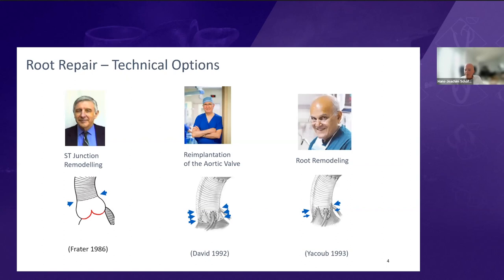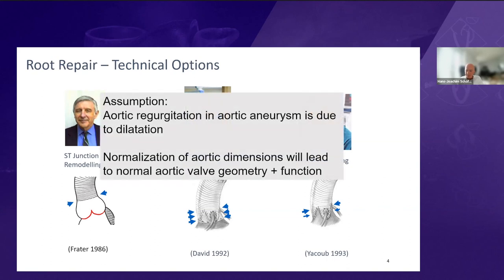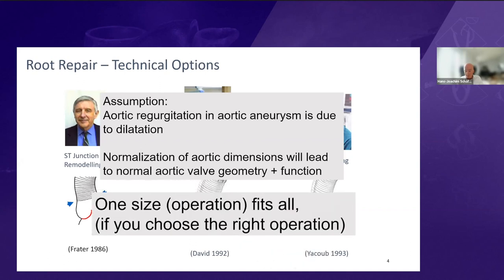Tyrone and Magdi designed operations specifically made for the enlarged root. The general assumption behind these operations was that aortic regurgitation was mainly due to aortic dilatation, and that by normalizing aortic dimensions, normal aortic valve geometry and function should be achieved. In other words, one size fits all if you choose the right operation — and if the result is not good, you've chosen the wrong operation.